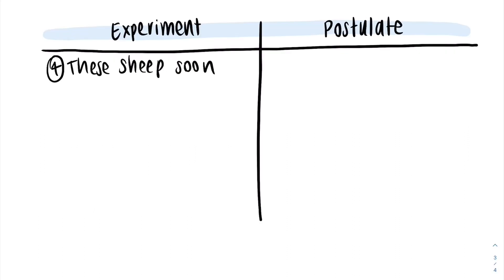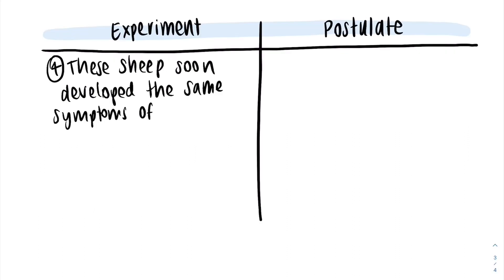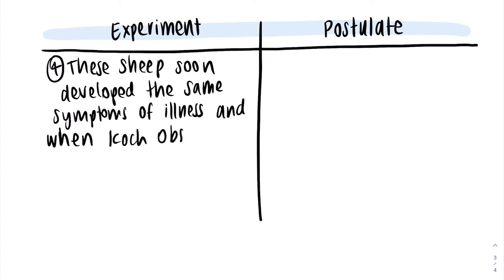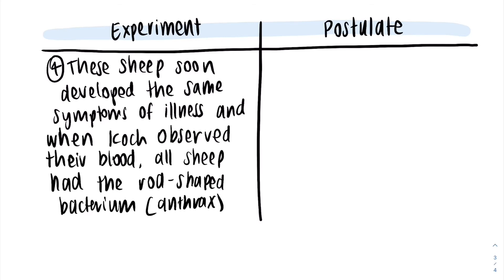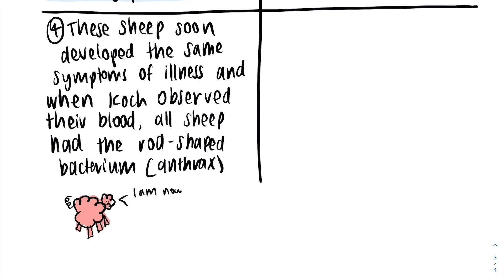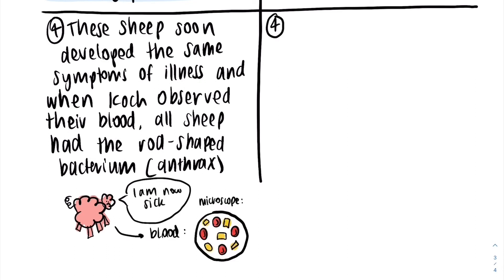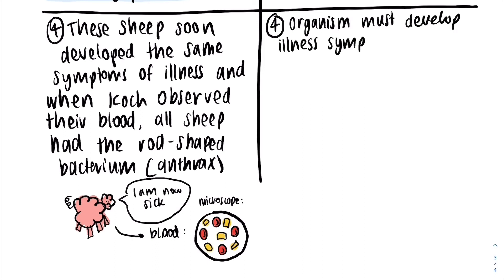Lastly, Koch noticed that these healthy sheep developed the same symptoms of illness, and when Koch observed their blood, all the sheep had the rod-shaped bacterium, which is anthrax. This led to his fourth and last postulate, which states that the organism must develop the symptoms of the illness and have the microorganism present in blood.